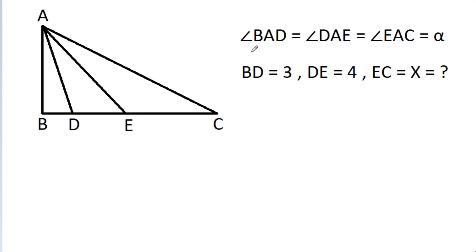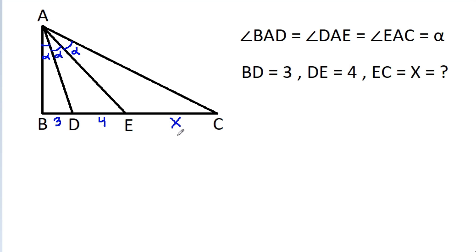In this video, we have given that angle BAD is equal to angle DAE is equal to angle ESC, all equal to alpha. So angle BAD is alpha, angle DAE is alpha, and angle ESC is alpha. And BD is equal to 3, DE is equal to 4, EC is equal to X, and we have to find the value of X.